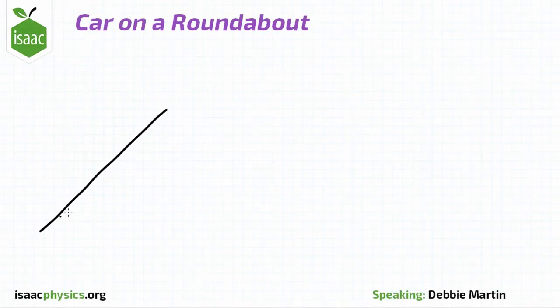We want to find the maximum speed at which the car can travel around the banked corner and not slip. The road is now rough and the coefficient of friction is mu.